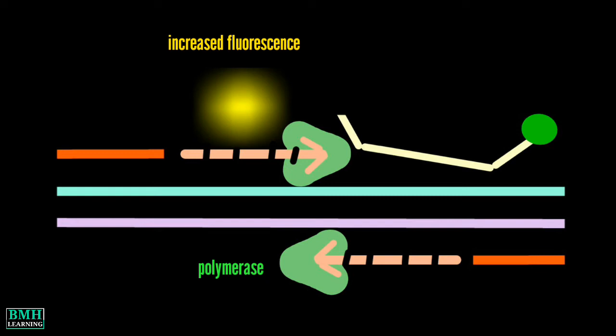The cleavage of the probe separates the reporter dye from the quencher dye, increasing the reporter dye signal, removes the probe from the target strand, allowing primer extension to continue to the end of the template strand.